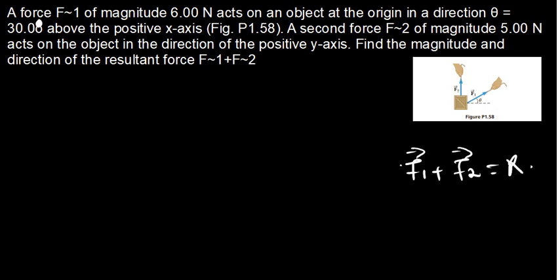So when we want to find the resultant, the first thing to do is to find the x and y components of those two vectors. So we have vector F1 and vector F2. The angles which we are going to use to resolve these vectors into x and y components, we are going to get them from the positive x-axis. So for F1, we have been given that it is 6.00N at an angle theta of 30 degrees.